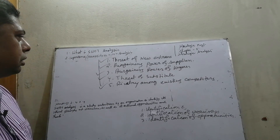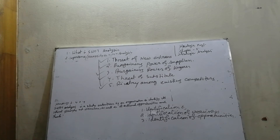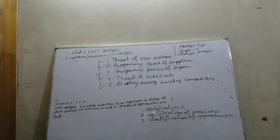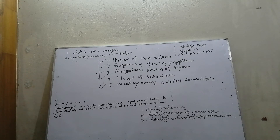Bargaining power of suppliers: strong bargaining power allows suppliers to sell at higher prices or supply low quality raw materials to their buyers. This directly affects the buying firm's profit because it has to pay more for materials. Suppliers have strong bargaining power when there are few suppliers but many buyers, suppliers are large and can forward integrate, few substitute raw materials exist, suppliers hold scarce resources, and the cost of switching raw materials is especially high.